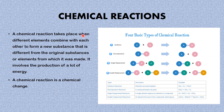Now moving ahead, we will be looking at chemical reactions. A chemical reaction takes place when different elements combine with each other to form a new substance that is different from the original substances or elements from which it was made. It involves the production of a lot of energy. A chemical reaction is a chemical change. Matter undergoes two changes: physical and chemical changes. A chemical change describes the change in the composition of matter.